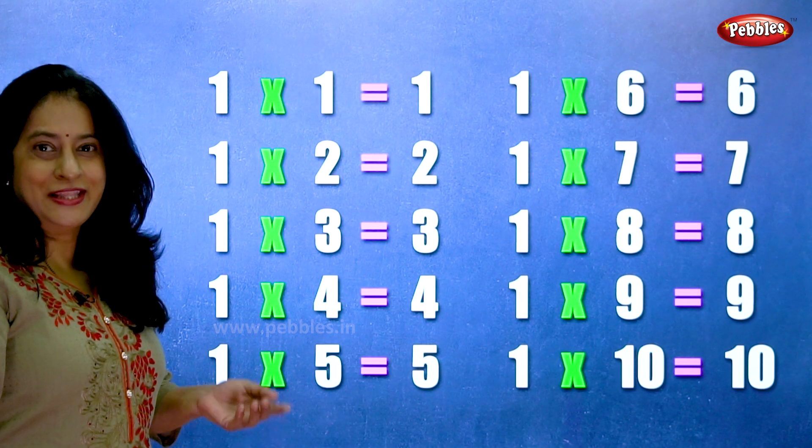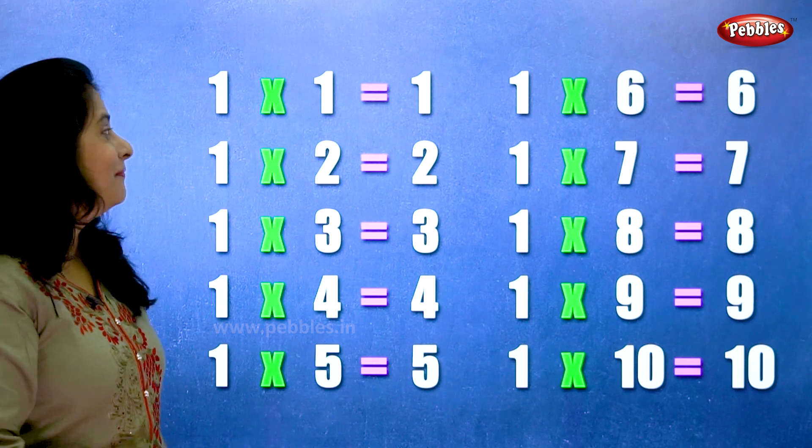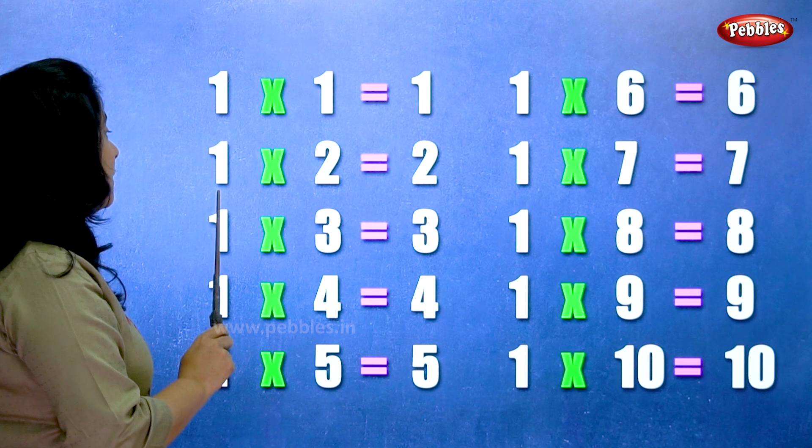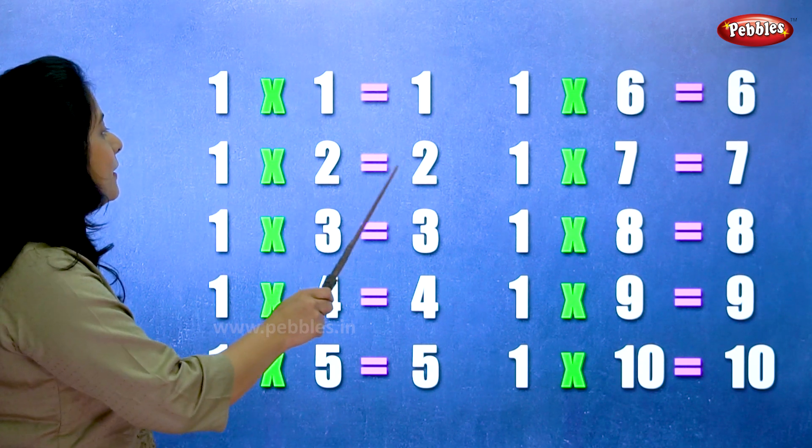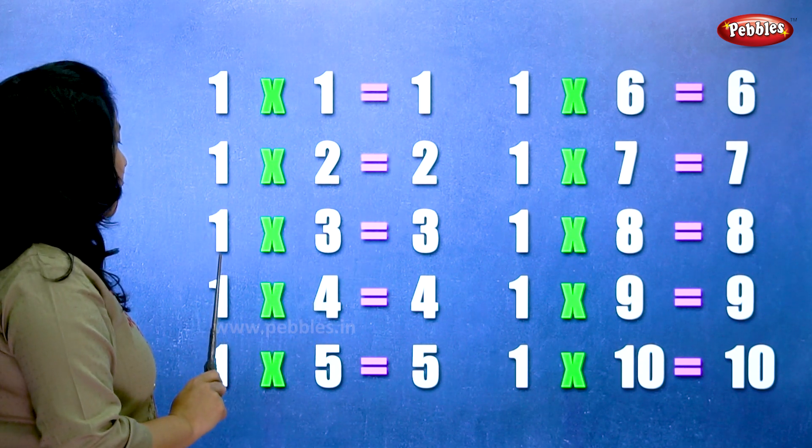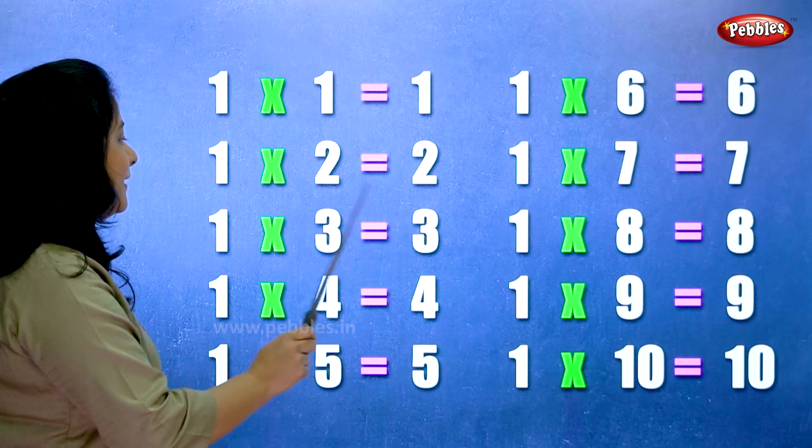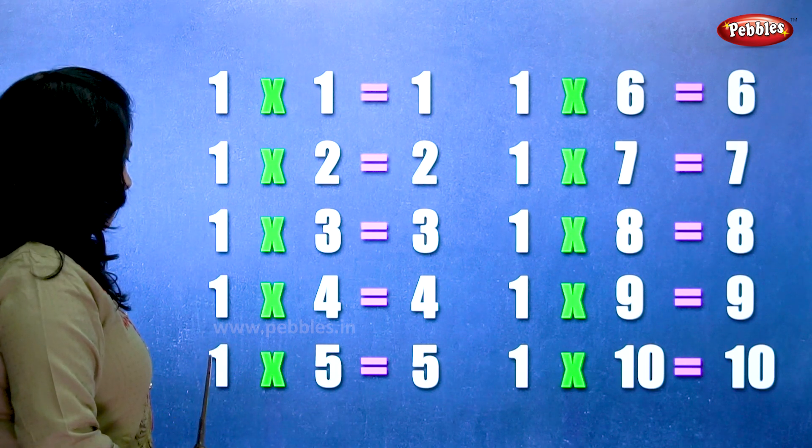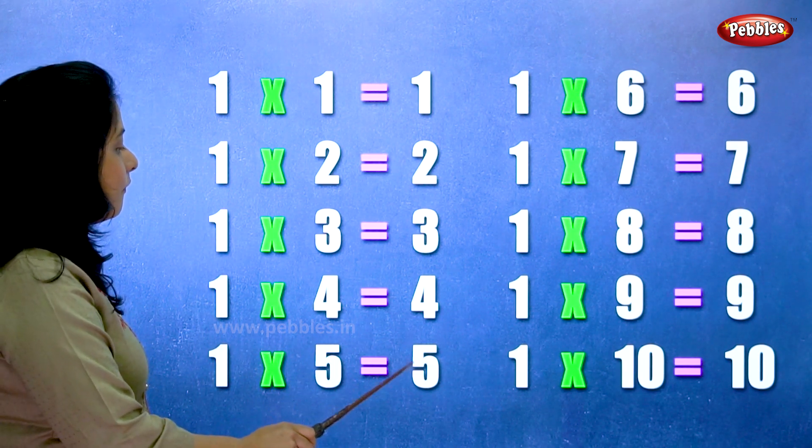Let's learn the table of 1 one more time. 1 1s are 1. 1 2s are 2. 1 3s are 3. 1 4s are 4.